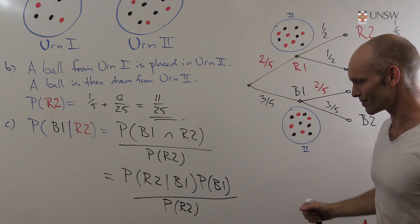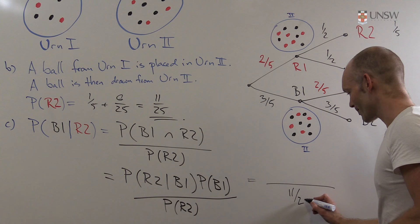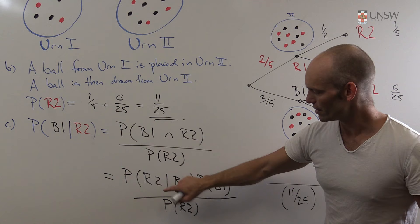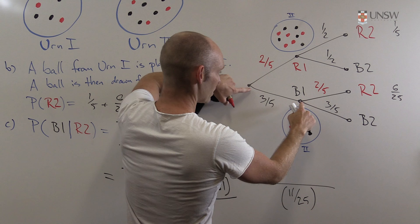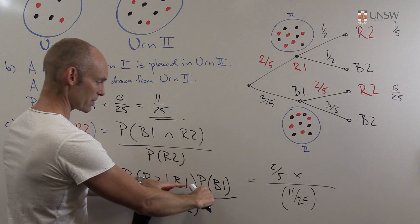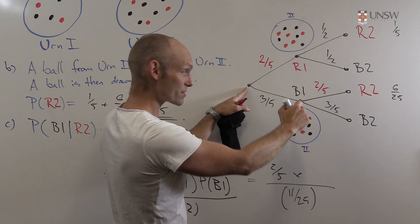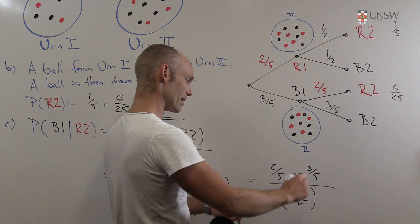From the diagram, P(R2 | B1) — the probability of drawing a red ball from urn two given we drew black first — is 2/5. And P(B1), the probability of drawing black on the first attempt from urn one, is 3/5. So P(B1 | R2) = (2/5 × 3/5) / (11/25) = (6/25) / (11/25) = 6/11. That's our final answer.